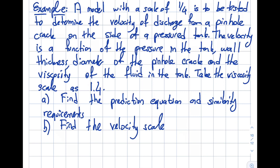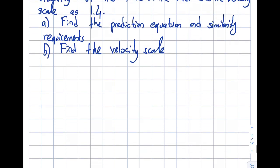Part a: find the prediction equation and similarity requirements. Part b: find the velocity scale. I will go through this whole process that we established in steps. Step number one was writing what the velocity is a function of. The question says that velocity is a function of the pressure inside the tank, the wall thickness (I'm going to call this l), diameter of the pinhole crack, and the viscosity. It doesn't mention the density, so I'm not taking it in.